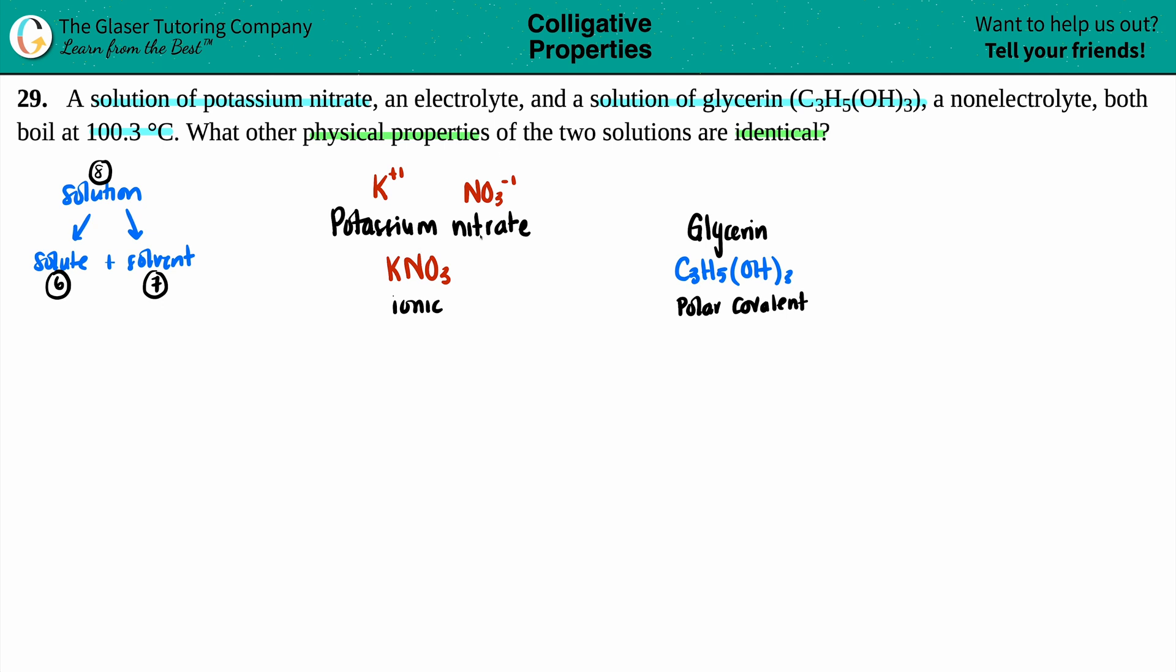So potassium nitrate and glycerin, these are both of your solutes. But the question is, who is my solvent? They didn't say. But they did say that it boiled at 100.3 degrees Celsius.